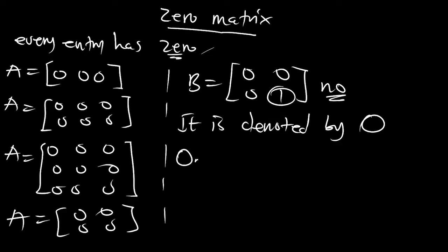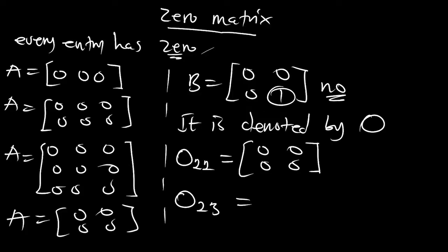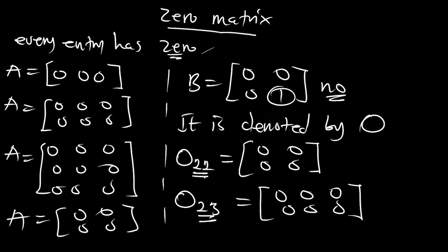A zero matrix of the order 2×2 is going to be written as [0,0; 0,0]. This is a proper written form of a zero matrix. We represent it with O. A proper 2×3 zero matrix is going to be [0,0,0; 0,0,0]. This 2×2 and 2×3 notation shows us the order of the matrix. You can write a matrix together with its order.